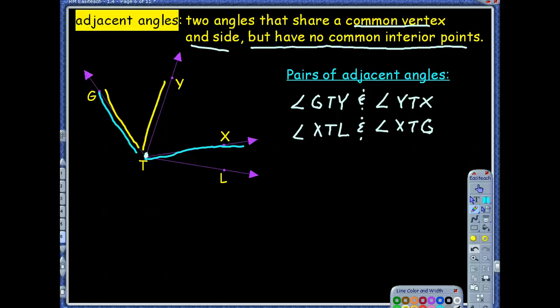I think a good way to remember this is adjacent angles are never inside of each other. It's always right next to each other. Another thing is angle GTY and angle XTL are not adjacent because they don't share common sides.